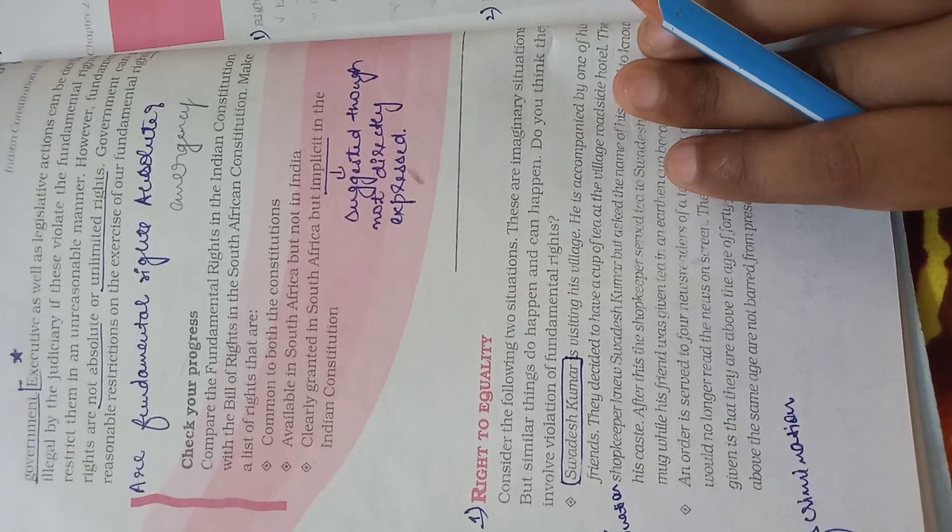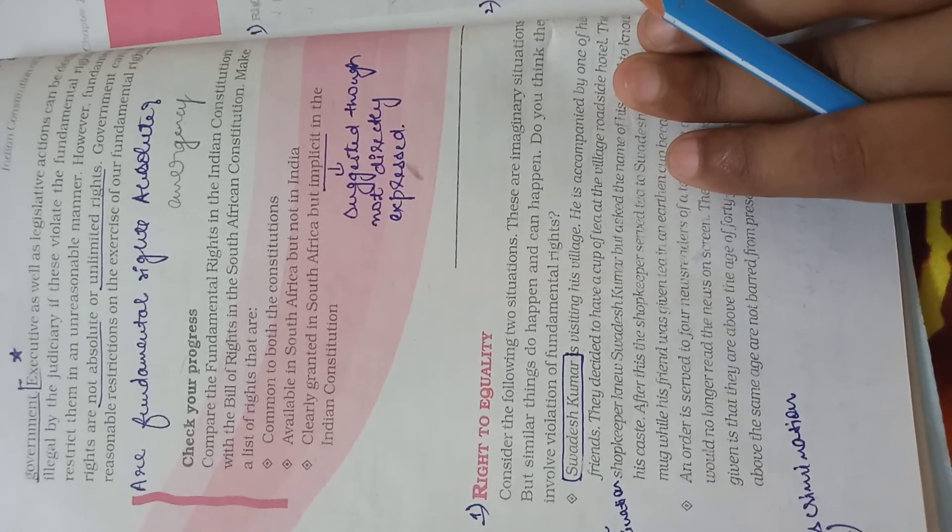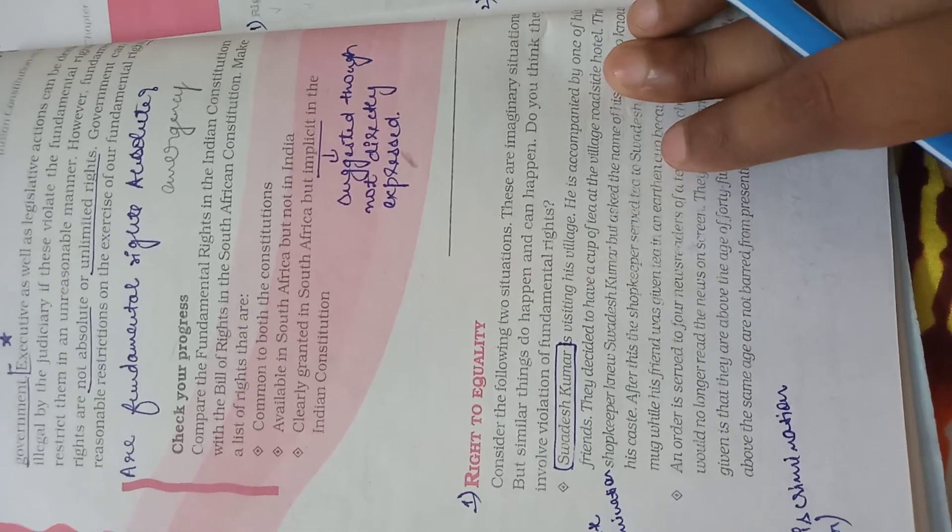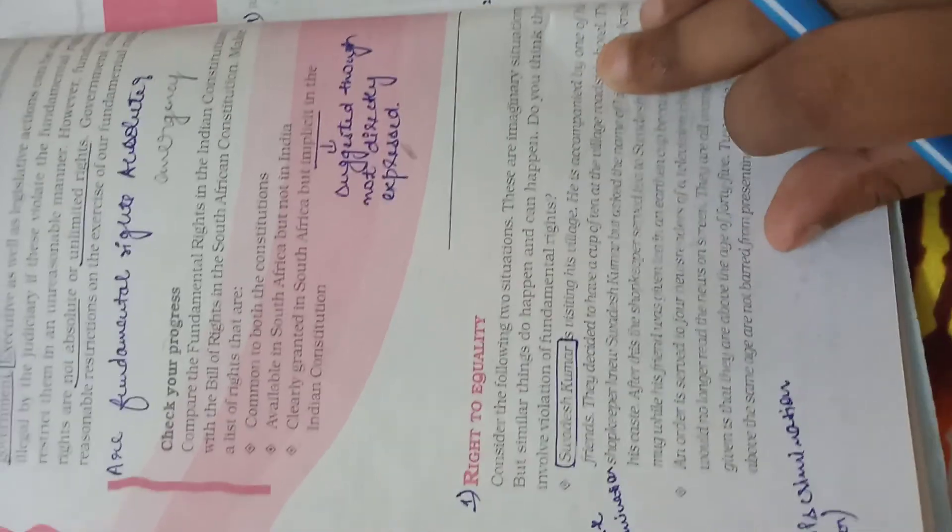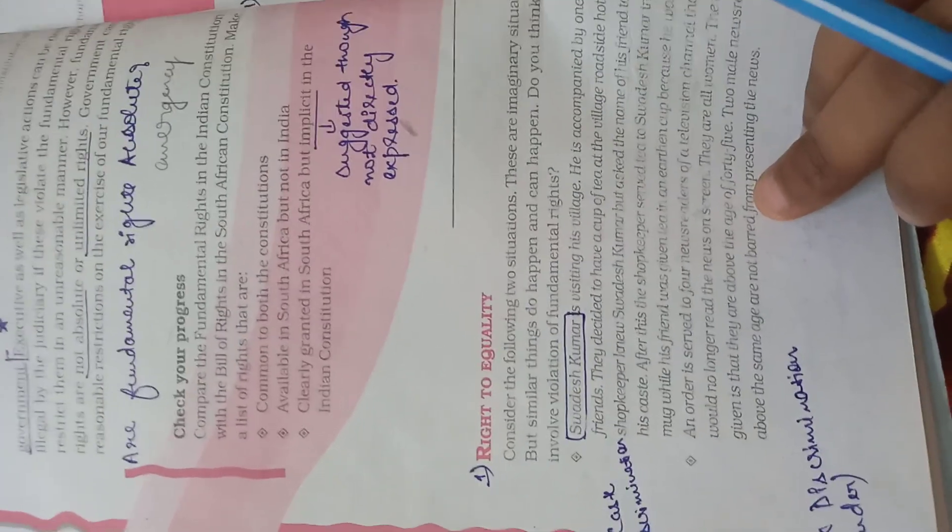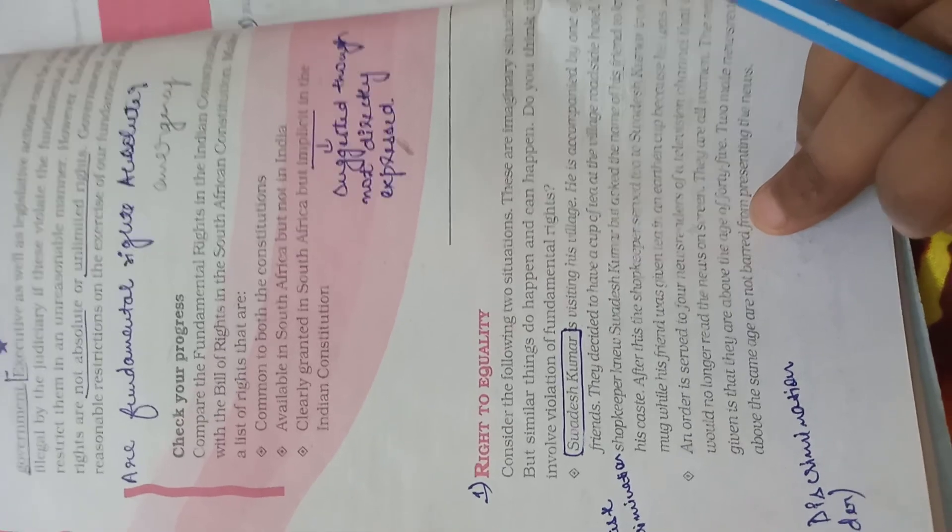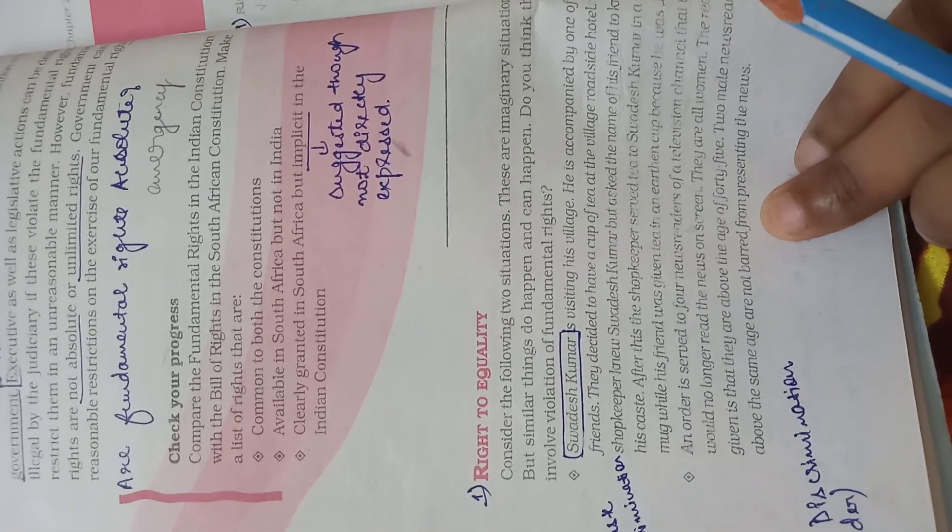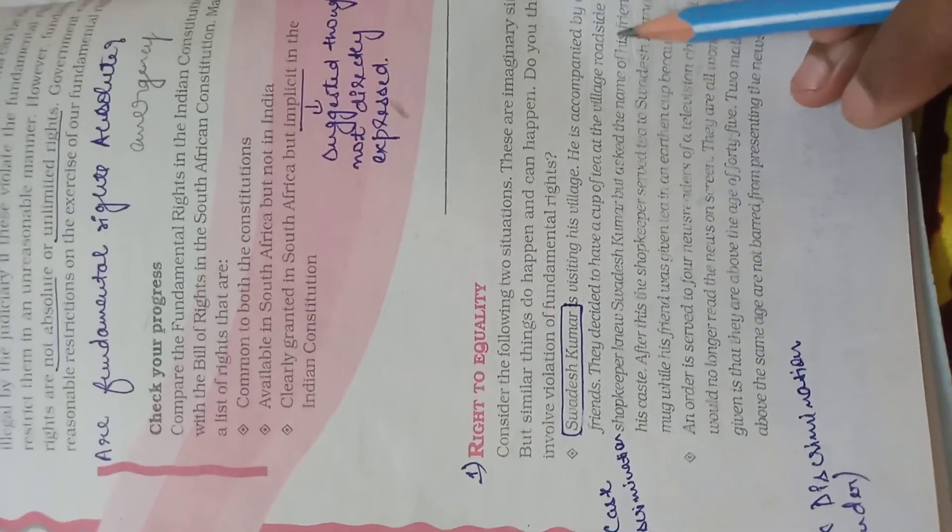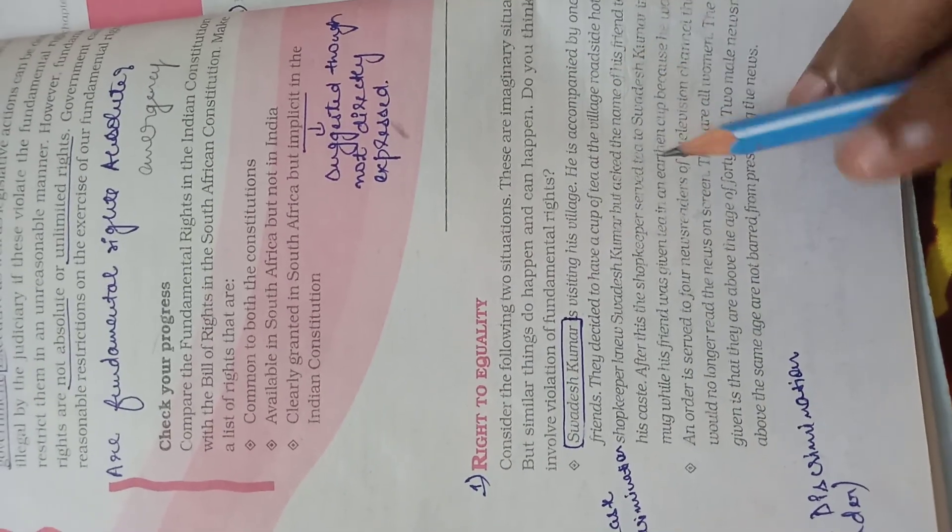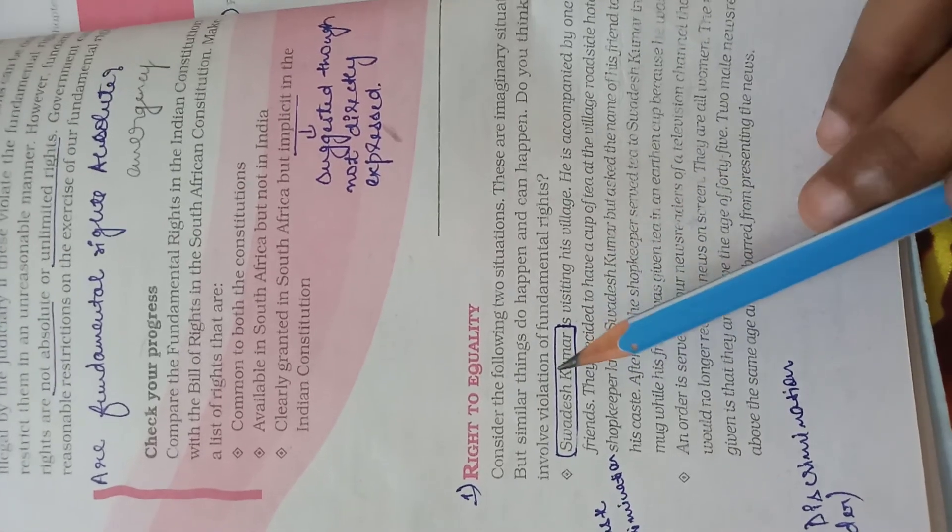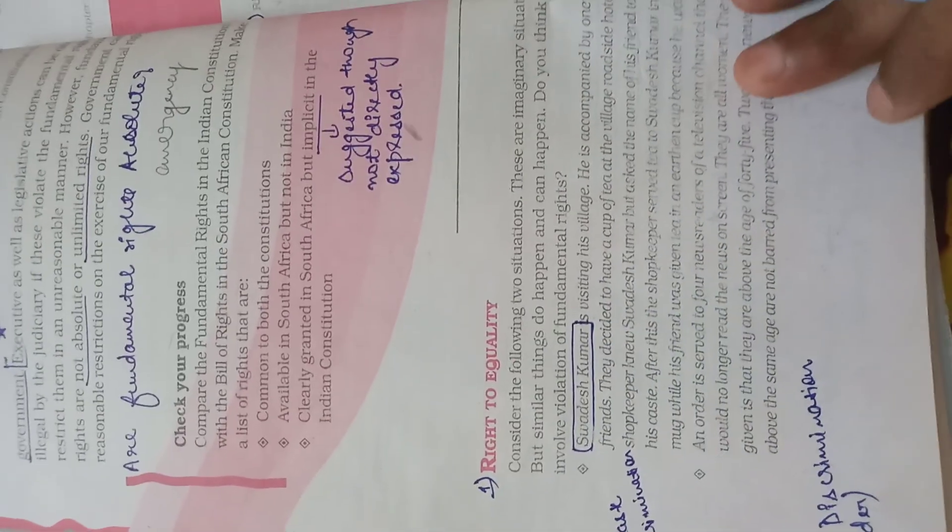Let us start with right to equality. Consider the following two situations. These are imaginary situations but similar things do happen and can happen. As a student of political science, you need to find out whether there is violation of fundamental rights. Let us study the first example.